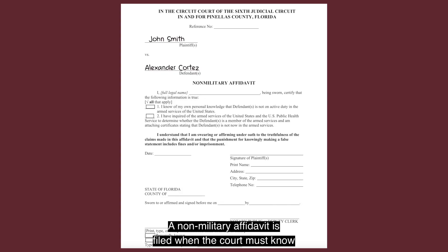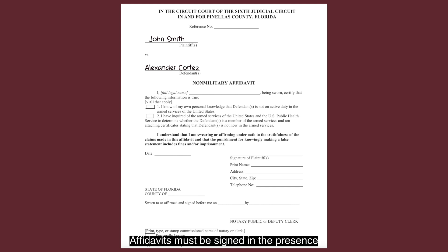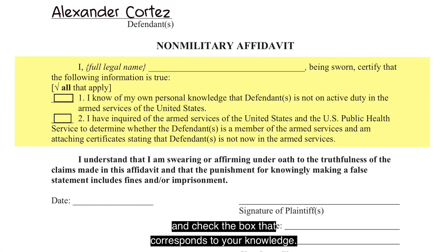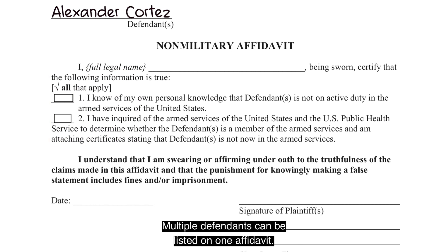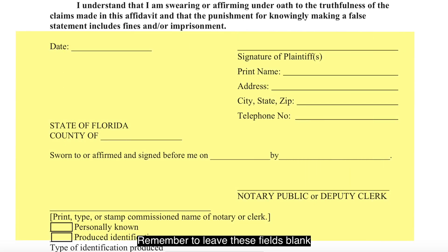A non-military affidavit is filed when the court must know the military status of a defendant. Active service members are granted certain protections under the Soldiers and Sailors Civil Relief Act. Affidavits must be signed in the presence of a notary or deputy clerk. Fill in the appropriate information and check the box that corresponds to your knowledge. Multiple defendants can be listed on one affidavit. Be sure to attach any supporting documentation to your affidavit. Remember to leave the signature fields blank until a notary or deputy clerk is present.